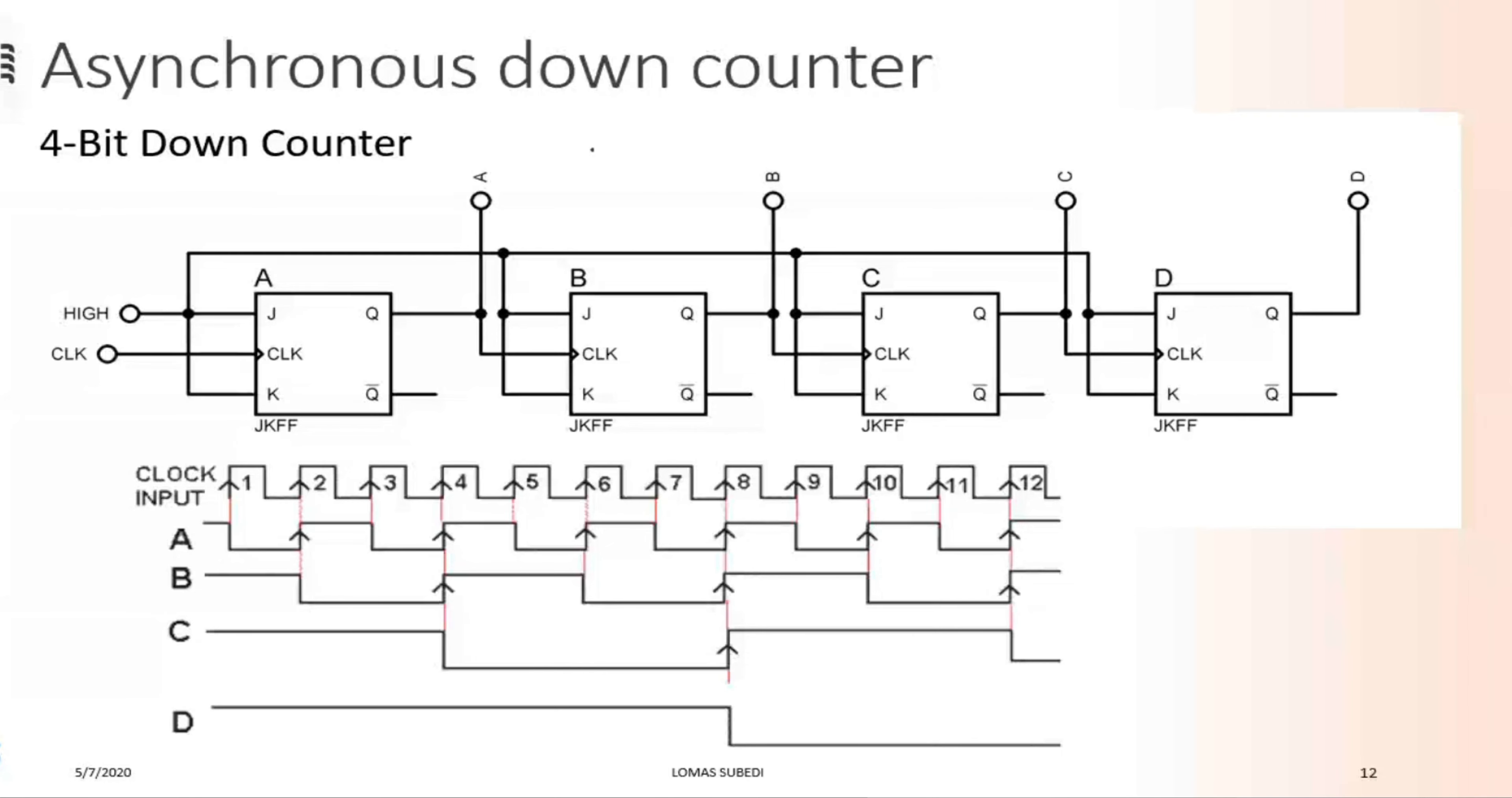Asynchronous Down-Counter. This is the positive configuration where it works with the clock. The positive way that the non-complemented output has been given. This is the down-counter.